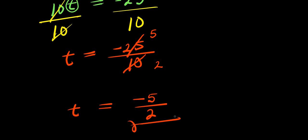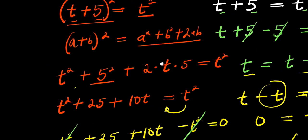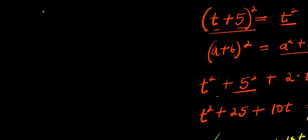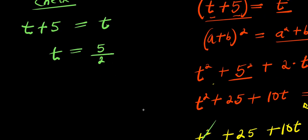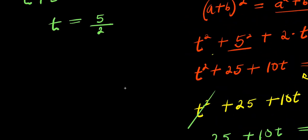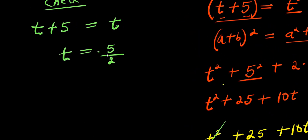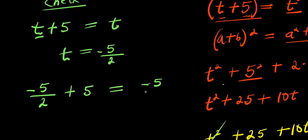So we are also going to check if this particular value will satisfy the equation. Let's check. The original equation is t plus 5 equals t, and our t equals negative 5 over 2. I'm going to substitute this for t: I have negative 5 over 2 plus 5, is it the same thing as negative 5 over 2?